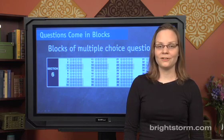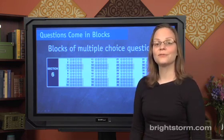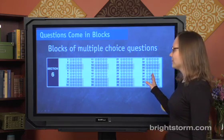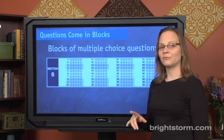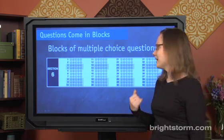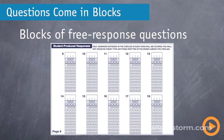Questions come in blocks of two types. The first type is multiple choice. So you might get a cluster of questions that are like the ones you're used to seeing on standardized tests. There's one other kind of block of questions that you'll also see, and that's grid-ins, which you could also call free response.